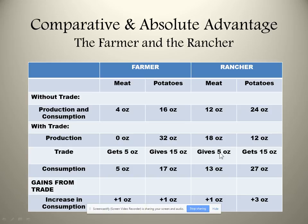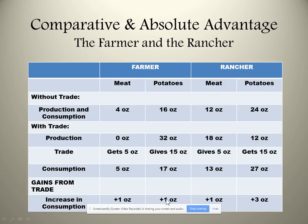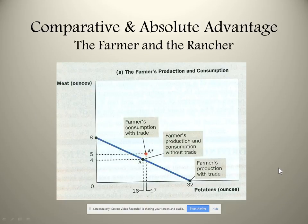The rancher continues: 'I'll give you 5 ounces of meat in exchange for 15 ounces of your potatoes. My consumption becomes 13 ounces of meat and 27 ounces of potatoes, versus 12 and 24 before. Your consumption becomes 5 ounces of meat and 17 ounces of potatoes, versus 4 and 16 before. You got one more ounce of each thing. I got one more ounce of meat and three more ounces of potatoes.' It seems almost magical.